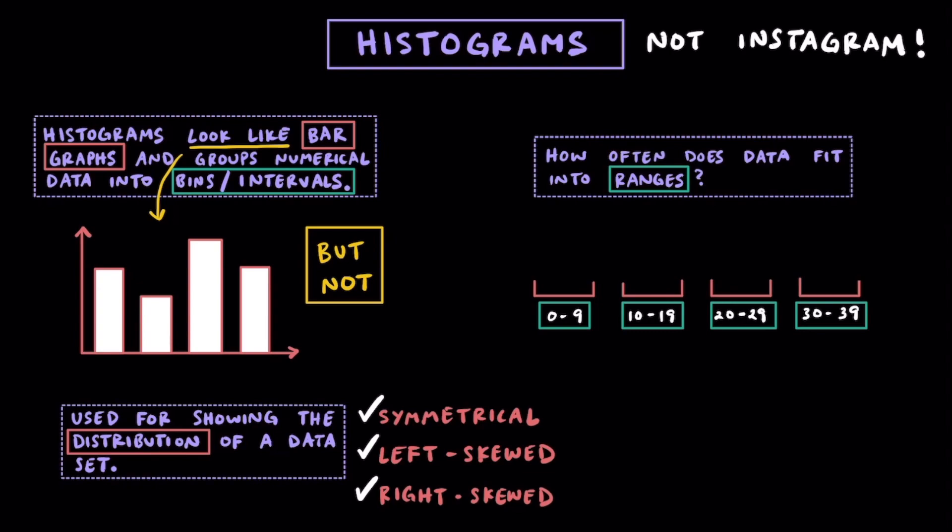When the second one ends with 19, the third one begins with 20, and when the third one ends with 29, the fourth one begins with 30.